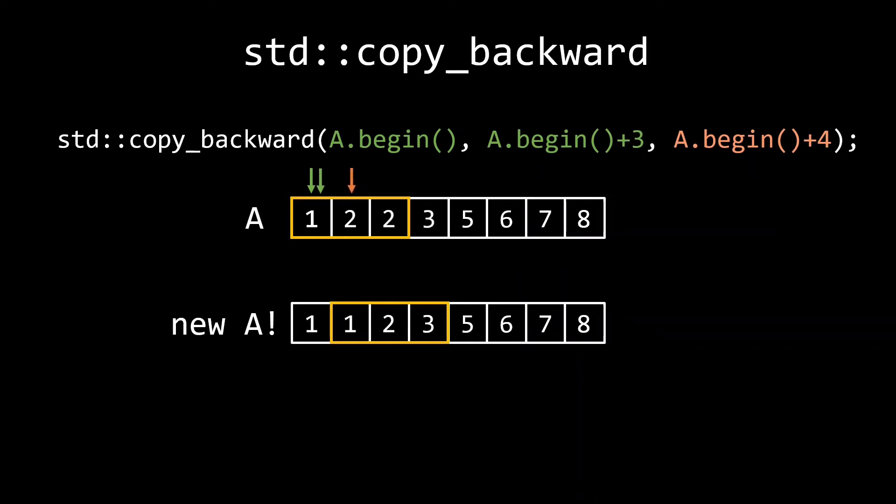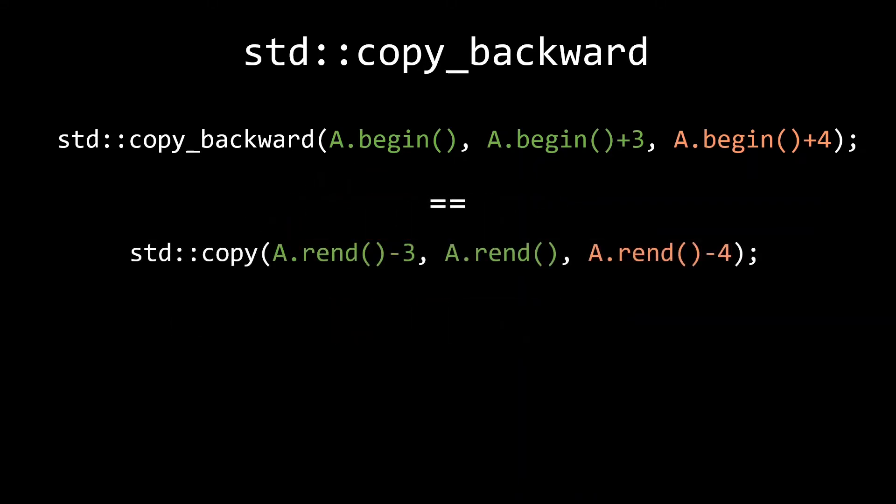Of course, if you think about it a bit, you'll probably realize that copy_backward is merely a convenience function, as we could achieve the same thing by using reverse iterators in our normal std::copy. That being said, it is a lot easier to make mistakes when using reverse iterators. Combined with the fact that the name copy_backward immediately signals to the reader of your code what the function is doing, I definitely prefer copy_backward over a normal copy with reverse iterators.